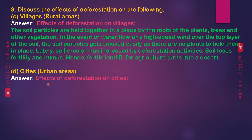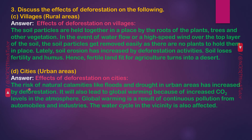Effects of deforestation on cities and urban areas: The risk of natural calamities like floods and drought in urban areas has increased due to deforestation. It also leads to global warming because of increased CO2 (carbon dioxide) levels in the atmosphere. Global warming is a result of continuous pollution from automobiles and industries. The water cycle in the vicinity is also affected.